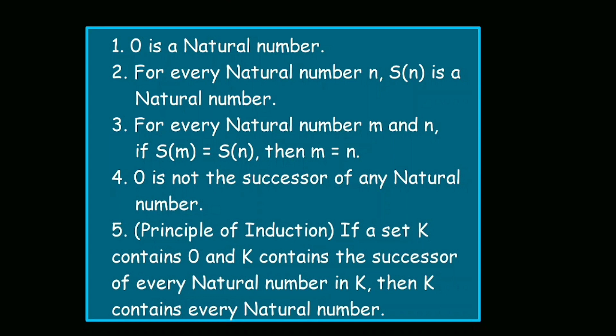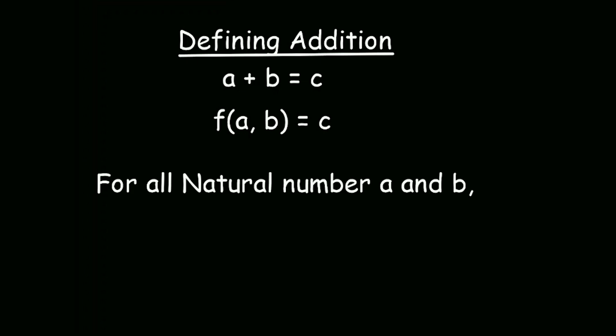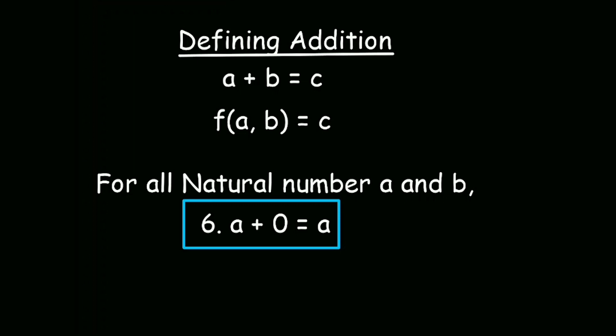Now let's jump into the next concept, addition. Addition is a function that maps two natural numbers to another one. In Peano arithmetic, we define addition using these two axioms. For all natural numbers a and b, we have a plus 0 equals a, and a plus successor of b is equal to successor of a plus b. The first axiom is quite straightforward.